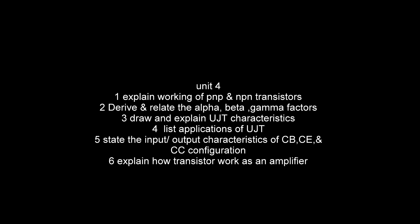Mention the types of LCD displays, explain the principle of the photovoltaic cell. Coming to Unit 4: explain working of PNP and NPN transistors, derive and define the alpha, beta, and gamma factors, draw and explain UJT characteristics, list the applications of UJT, state the input and output characteristics of CB, CE, and CC configurations, and explain how a transistor works as an amplifier.